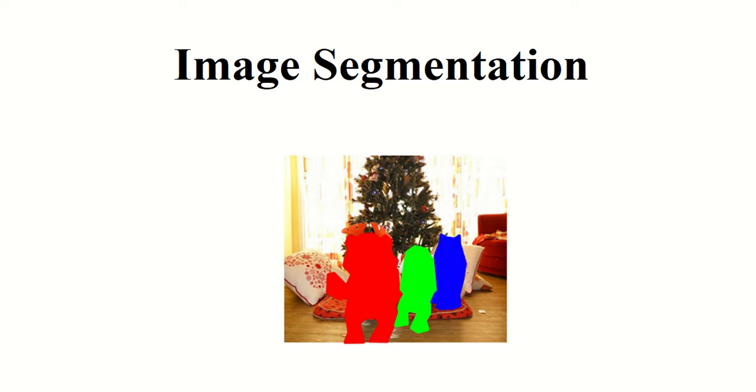Sometimes in image classification we will not get better results because the image may have various noises or many other objects which are not of interest to us. So before you do image classification, if you have multiple objects in an image it's always better to segment the image we are interested in and then do the classification. Image segmentation is like a pre-processing step for any image classification technique.